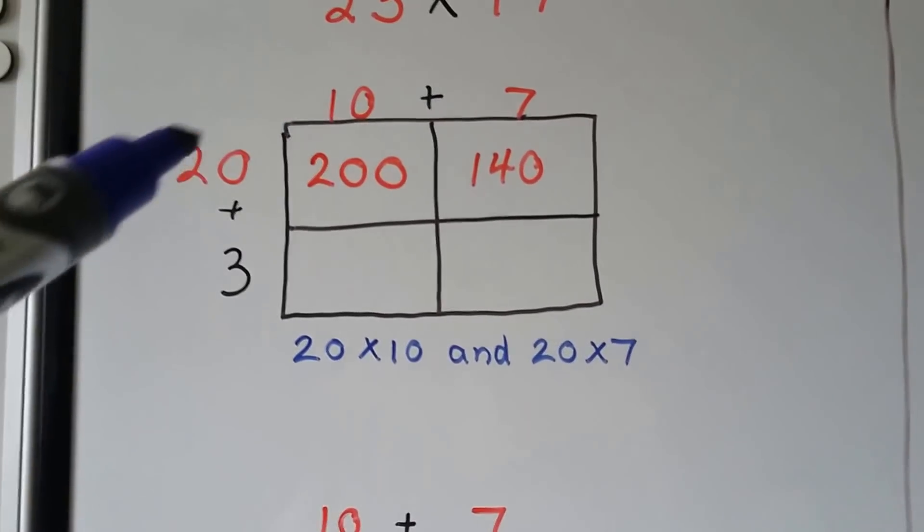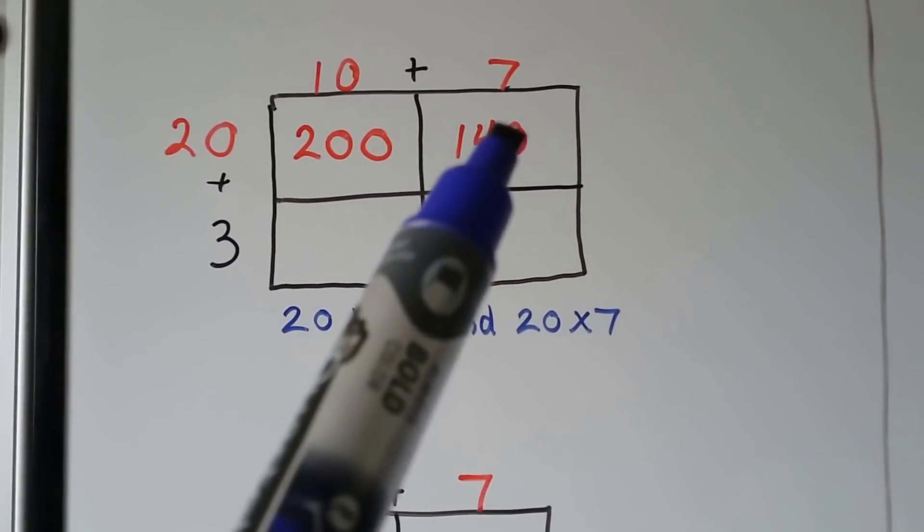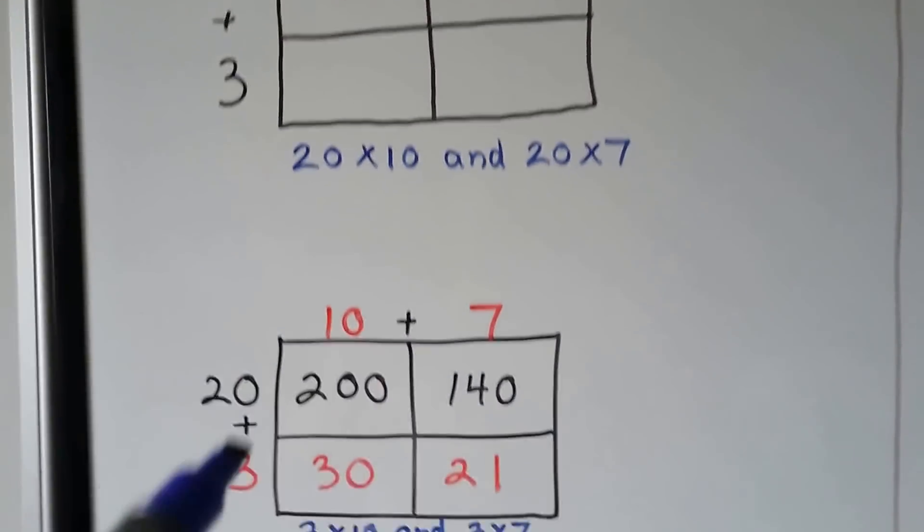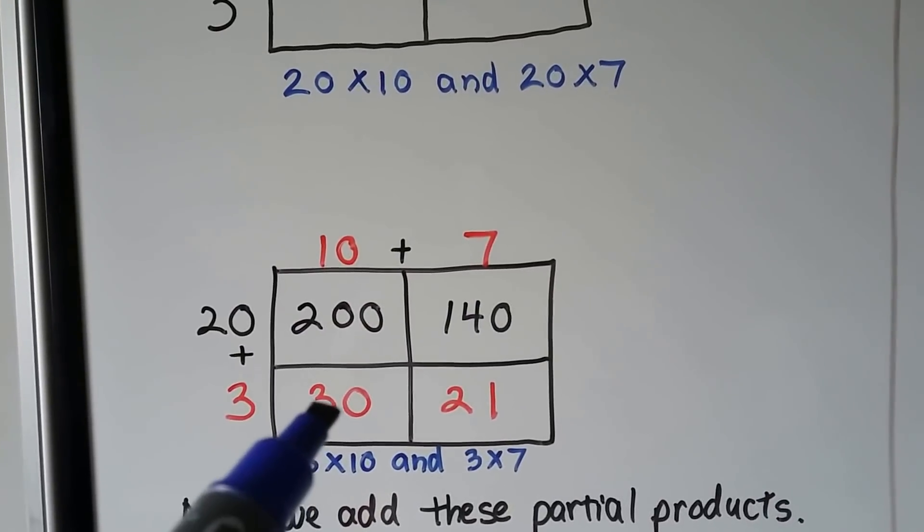Then we do 20 times 7, which is the same thing as 2 times 7 with an extra 0. So that's 14, and the 0 makes 140. Now it's the 3's turn. The 3 gets multiplied to the 10 and to the 7. We get 30 and 21.